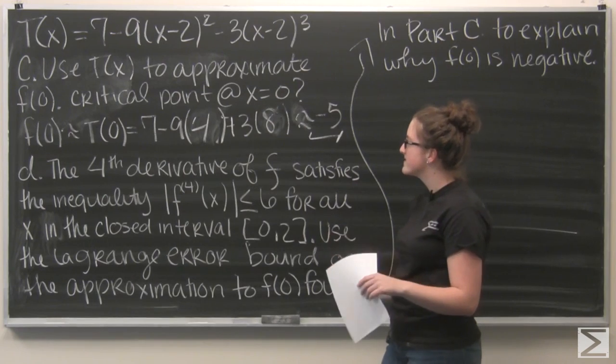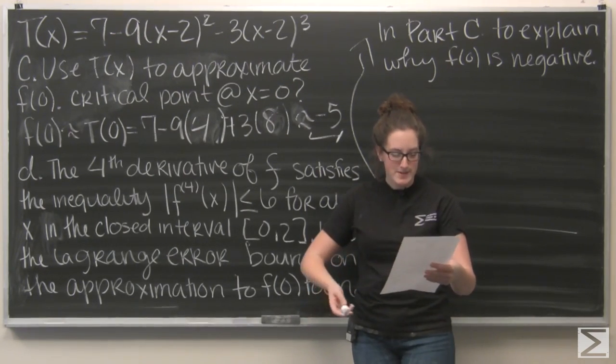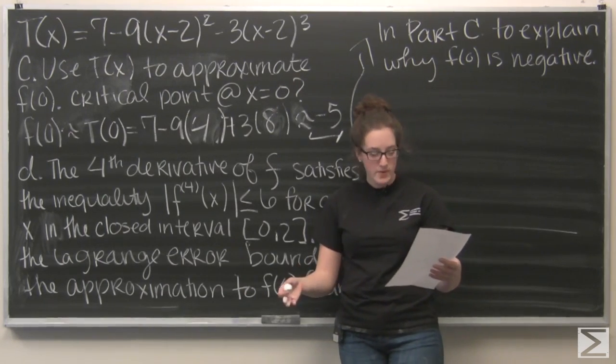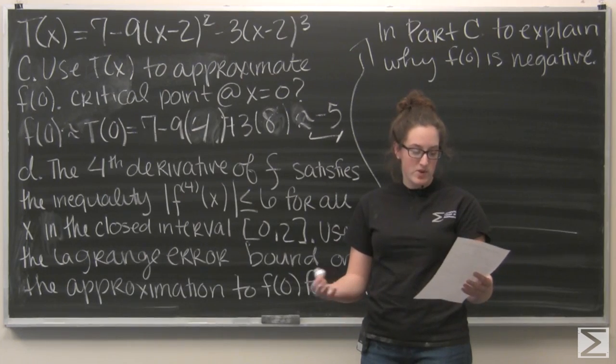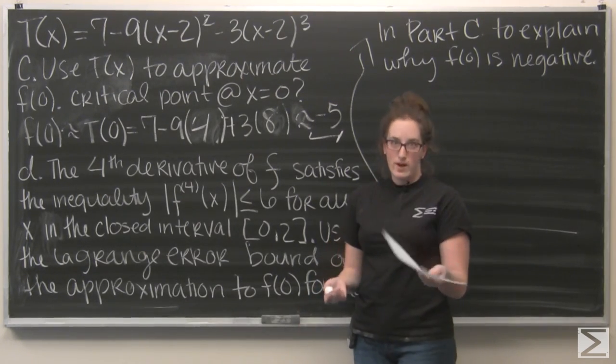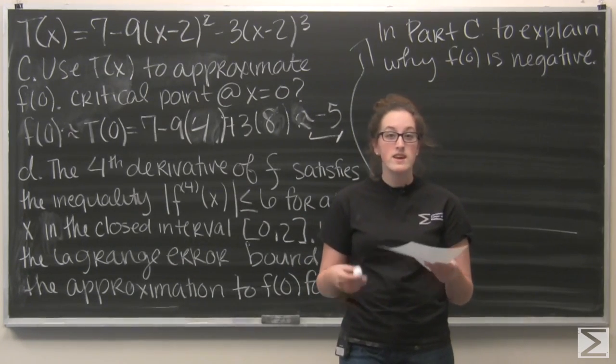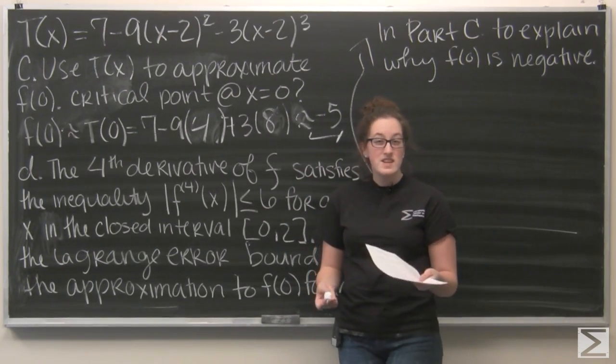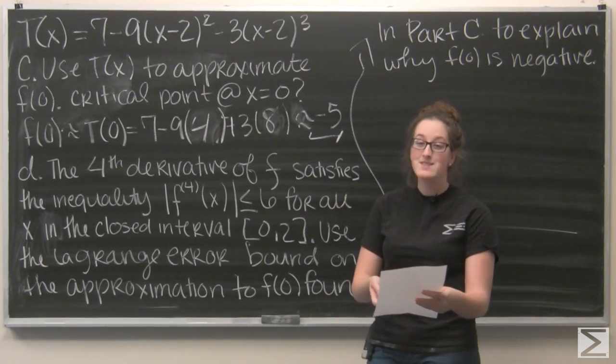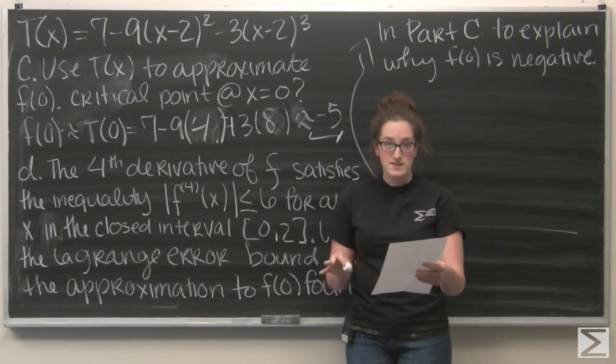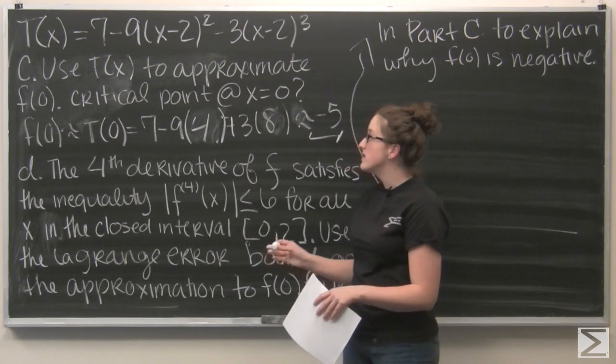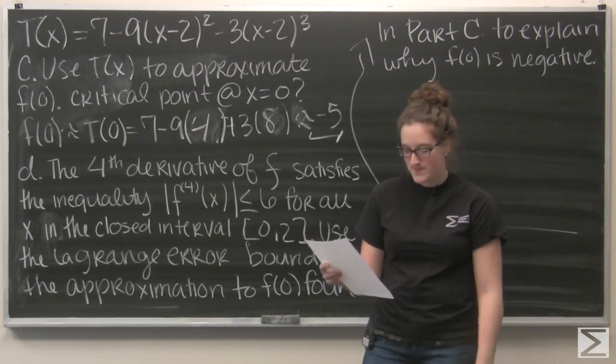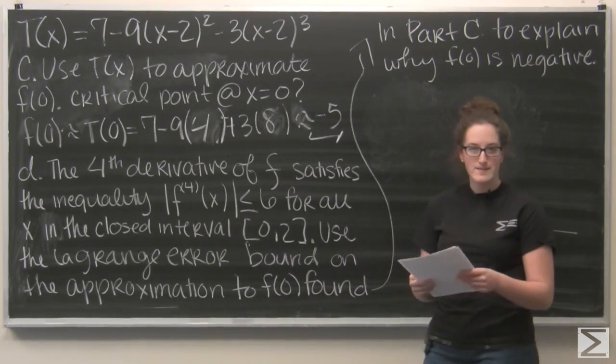So, that's my approximation for f at zero. And now, it also asks the same question as part b. But I can read it to you again. So, is there enough information to determine whether f has a critical point at x equals zero? If not, explain why not. If so, determine if it's a relative maximum, minimum, or neither, and explain. Well, we know that a Taylor polynomial is only really good and accurate when we're actually at the value that it's centered at. So, here, zero is too far away from two for us to get a good estimate on any of the derivatives of f. So, I'm going to say no. There's not enough information to decide where there's a critical point at x equals zero because the Taylor polynomial is only a good fit for x at the center. So, you would just want to write that out if you were taking the exam.